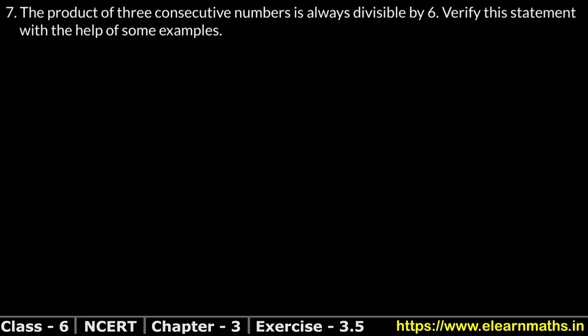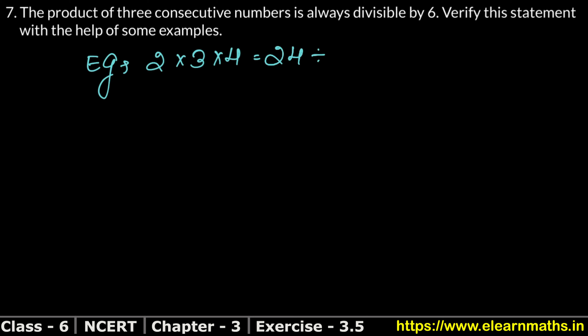Let's take three consecutive numbers: 2, 3, 4. Multiplying: 2 × 3 = 6, and 6 × 4 = 24. We know that 24 is divisible by 6. Let's take another example.